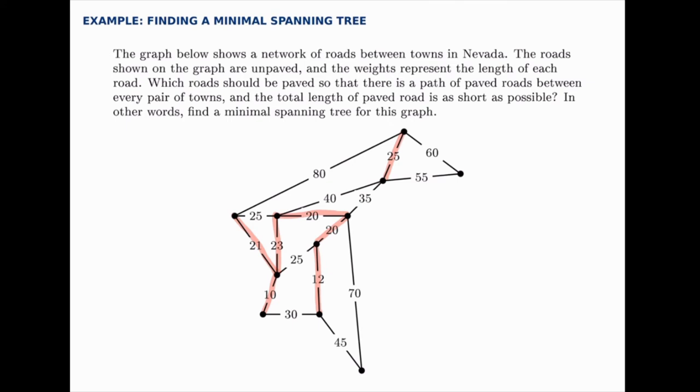The next shortest length is 30 but if we added that we would now have a loop here so we won't add that one. Then the next shortest is a 35 so we'll add that one.